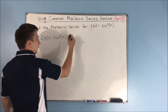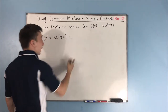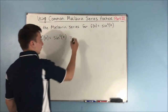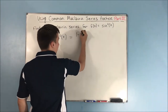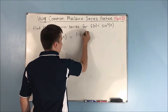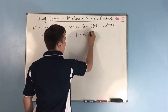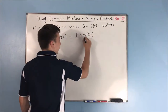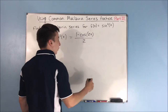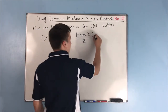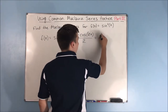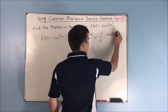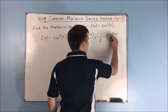Sine squared x — you could also use the half angle identity, and that's something we've done a bunch in calc 2, especially in our integration. That's 1 minus cosine of 2x over 2, which is equal to 1 half minus cosine of 2x over 2.